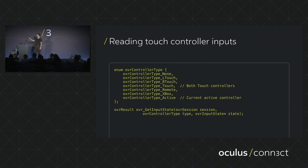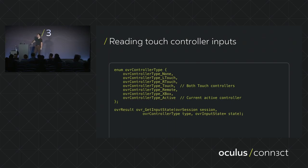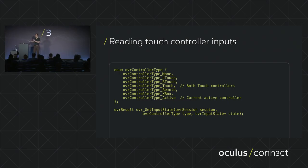The OVR controller type is an enumeration that tells you which controller gave you input. There's L touch and R touch, but also touch, which indicates both controllers. To get the input you call OVR get input state and pass it the controller type. You can also pass OVR controller type active, which automatically detects the current controller — switching between Xbox, touch, and the Oculus remote automatically. Best practice for most applications is to request input from the active controller.